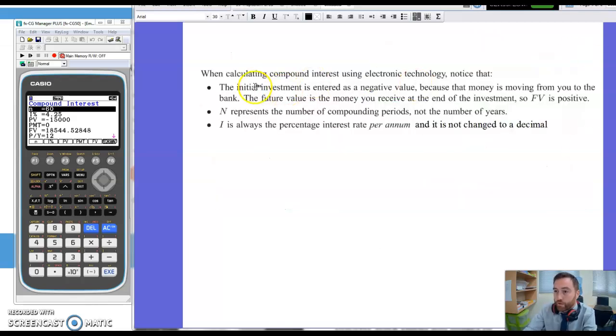Actually, a couple of little things to highlight. So the initial investment, as you saw, it was given as a negative value. When I'm giving that money into the bank, it's not in my pocket anymore, so I am down by 15,000. The future value is positive because you get it back from the bank at the end of your investment. And just highlighting there, N is the compounding periods, not the number of years.